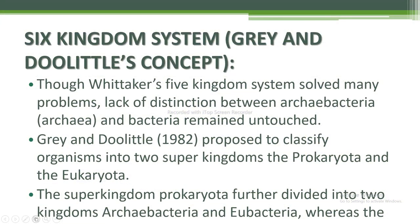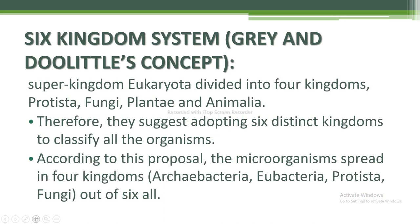Next I am going to discuss the six kingdom system of the Gray and Doolittle concept. Though Whittaker's five kingdom system solved many problems, the lack of distinction between Archaebacteria and Bacteria remained untouched. In 1982, Gray and Doolittle proposed classifying organisms into two super kingdoms — Prokaryota and Eukaryota. The super kingdom Prokaryota was further divided into two kingdoms: Archaebacteria and Eubacteria. The super kingdom Eukaryota was divided into four kingdoms: Protista, Fungi, Plantae, and Animalia. They suggested adopting six distinct kingdoms to classify all organisms.